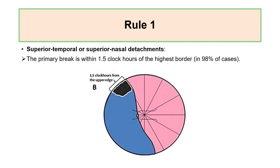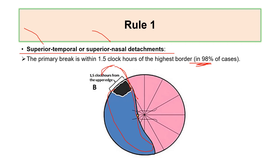Rule number one: if the patient has a superior temporal or superior nasal detachment, in 98% of cases the primary break will be within one-and-a-half clock hours of the highest border of the detachment. For example, in a superior nasal detachment with the highest border at 11 o'clock, the primary break location will be between approximately 9:30 and 11 o'clock.